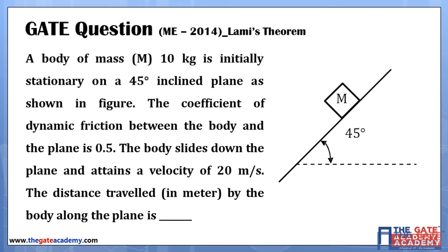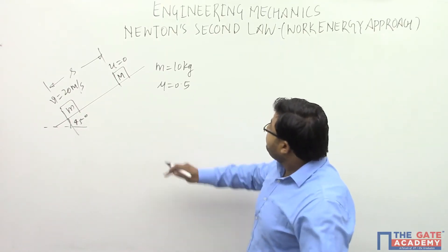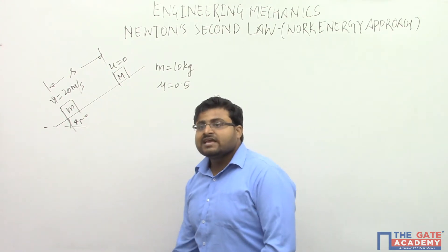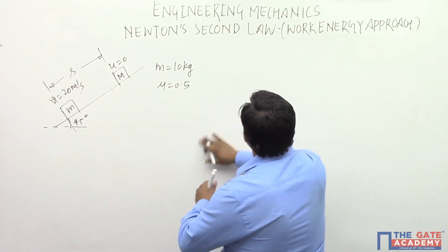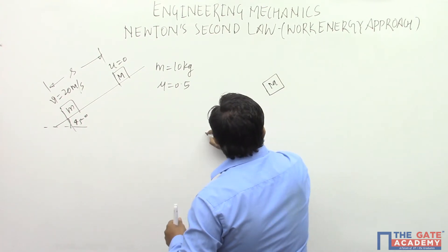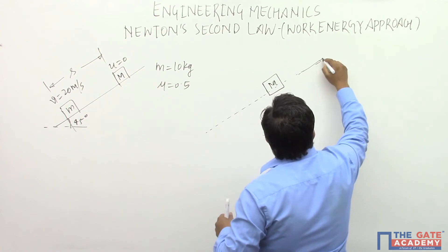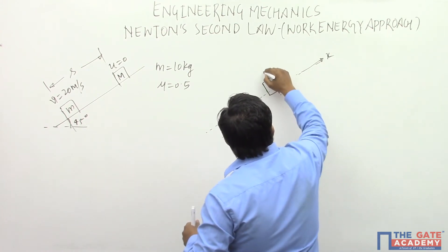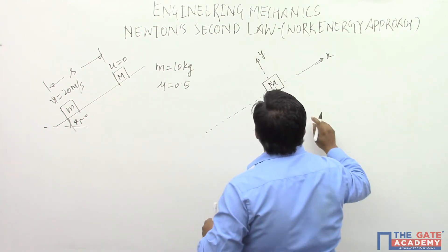A body of mass m = 10 kg is initially stationary on a 45-degree inclined plane as shown in the figure. The coefficient of dynamic friction between the body and the plane is 0.5. The body slides down the plane and attains a velocity of 20 m/s. The distance travelled in meters by the body along the plane is to be determined. We start with the free body diagram to calculate the work done, resolving forces along the inclined plane and perpendicular to the plane.